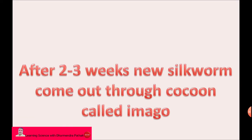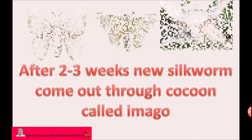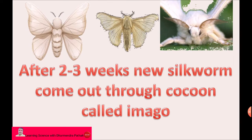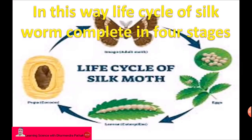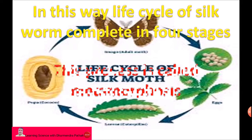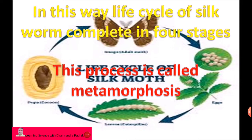After two to three weeks, a new silkworm comes out through the cocoon. This newly born silk insect or silk moth is called an imago. In this way, the life cycle of silkworm is completed in four stages: egg, larva, pupa, and adult. The process of completing the life cycle through these four stages is called metamorphosis.